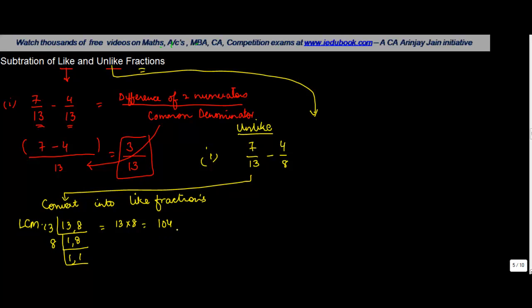So if we apply this LCM of 104, 7 upon 13 can be written as 13 into 8 upon 7 into 8 or 56 upon 104. Similarly, 4 upon 8 can be written as 8 into 13 upon 4 into 13, which is 52 upon 104.